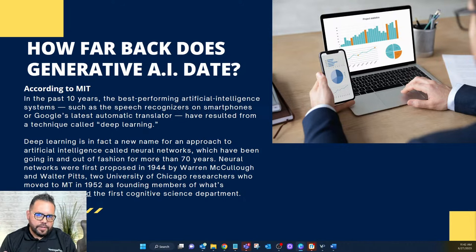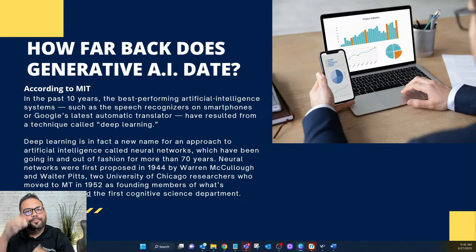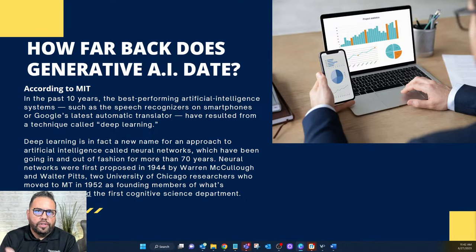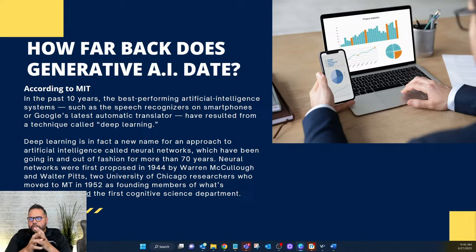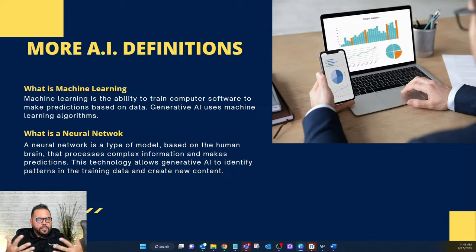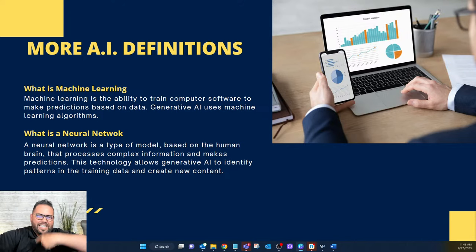MIT and Carnegie Mellon are the birthplaces of artificial intelligence, and they say generative AI comes from deep machine learning, which comes from neural networks — conversations about which got started in 1944. Although there is new technology out there that is extremely powerful, it's something that has been talked about, used, applied, perfected, tested, retested, and reclassified for decades. That means it's time-tested and proven to be valuable.